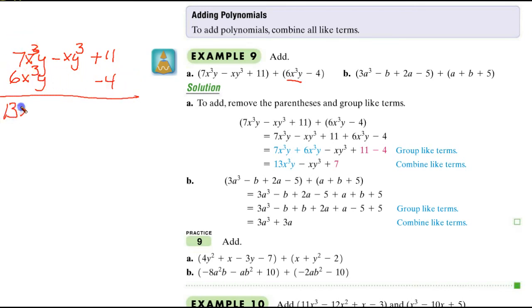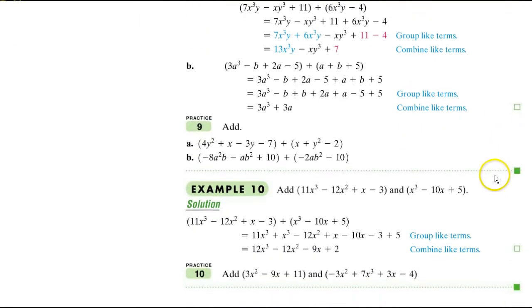What I've done is vertically set these up in their like term columns. So now this becomes 13x cubed y minus xy cubed. And then I get a plus 7. If you want to do it horizontally, that's how they're showing you in the textbook. That is a good way to do it also. And this one was not too difficult. But I like the style of doing it. You want to get the correct answer. And this one is done exactly the same way. Put them in like term columns and do it carefully. Watch the sign.